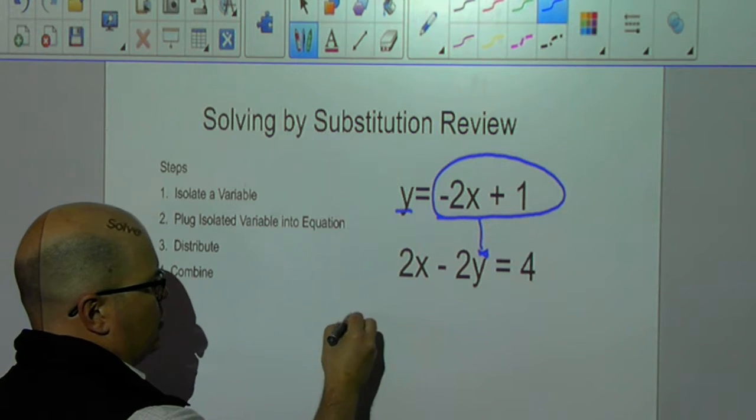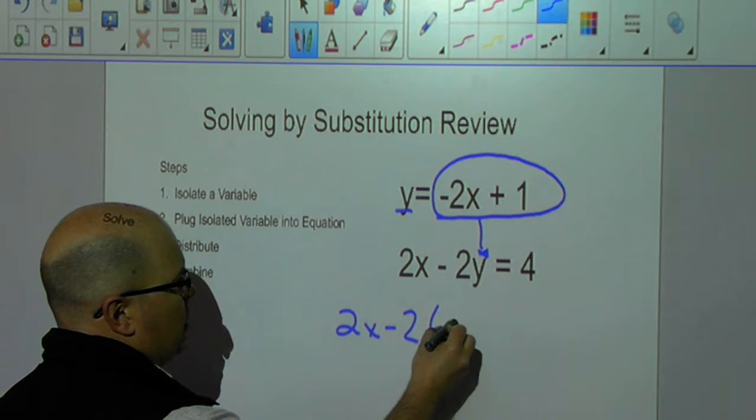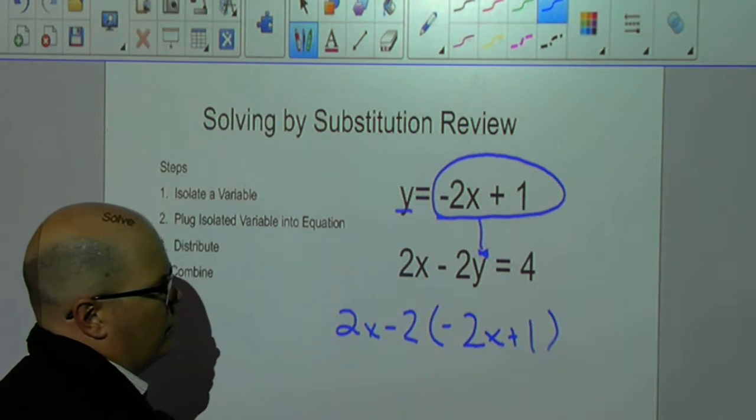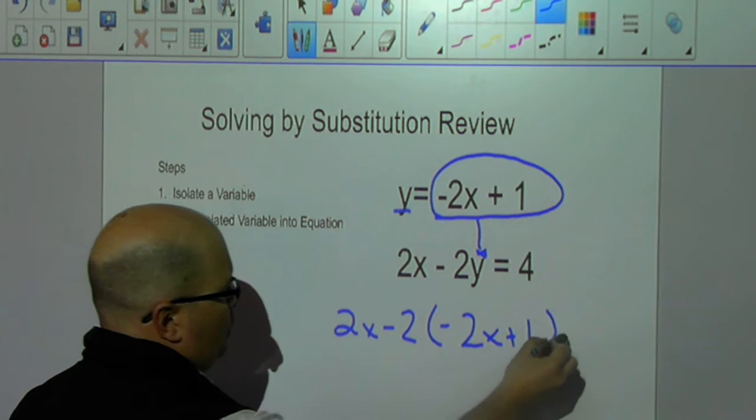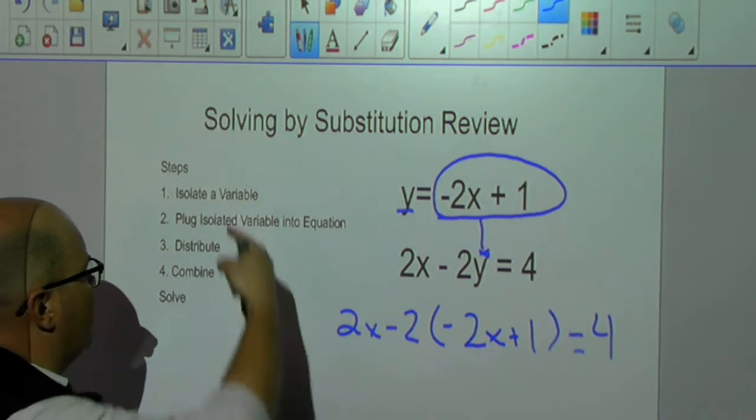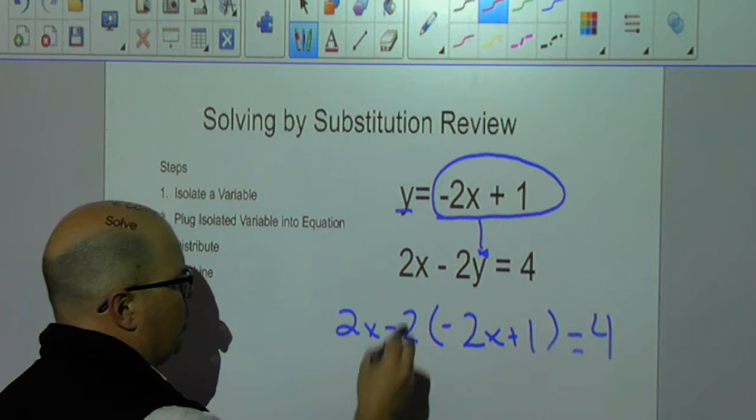We're going to go 2x minus 2, parentheses, negative 2x plus 1 equals 4. Now, we've isolated, we've plugged it into the equation, so now we're going to do our distribution.